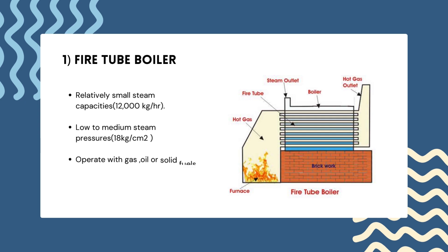The first type is the fire tube boiler, defined as a boiler consisting of a sealed container filled with water and a series of tubes running through it. The tubes carry hot gases from fire, usually fueled by coal, air or gas, that heat the water and generate steam. Fire tube boilers can generally produce low to medium pressure steam up to 17.5 bar and low to medium capacity up to 9 metric tons per hour, with a small steam capacity of 12,000 kg per hour and steam pressure of 18 kg per centimeter square.